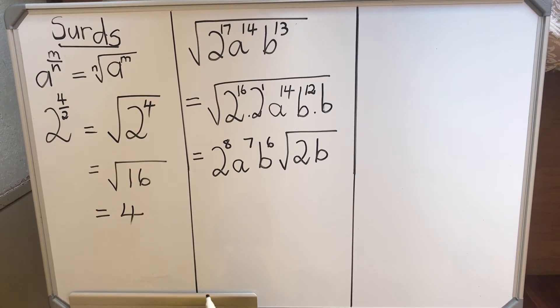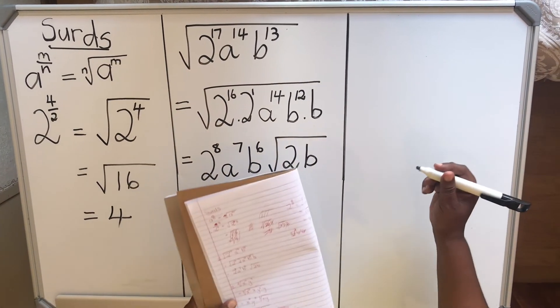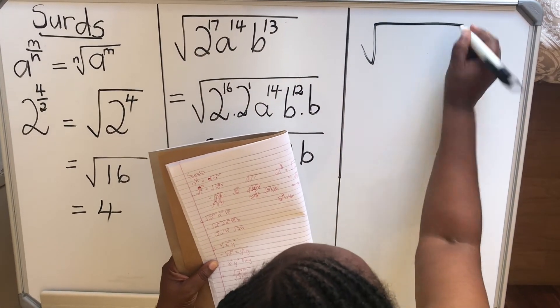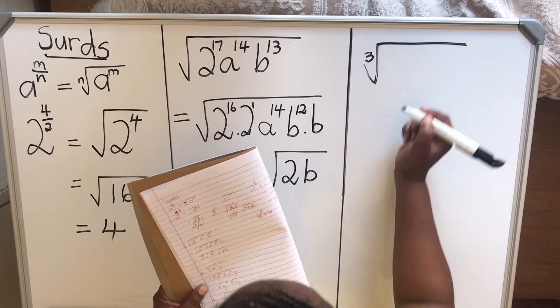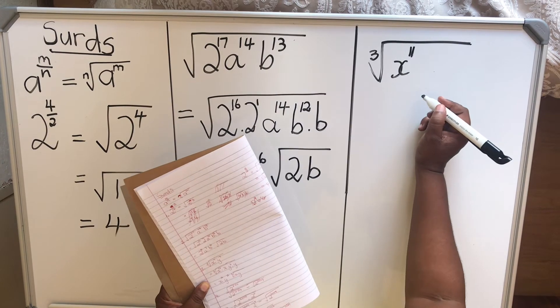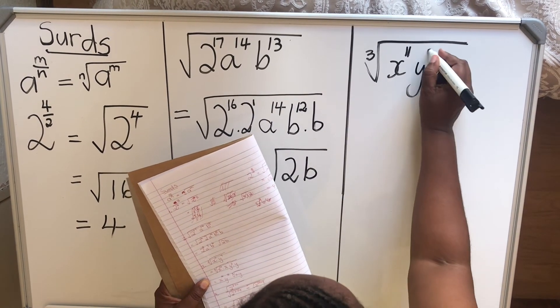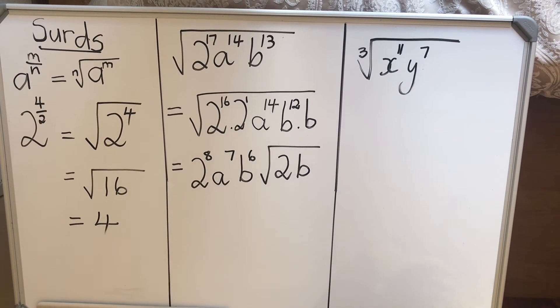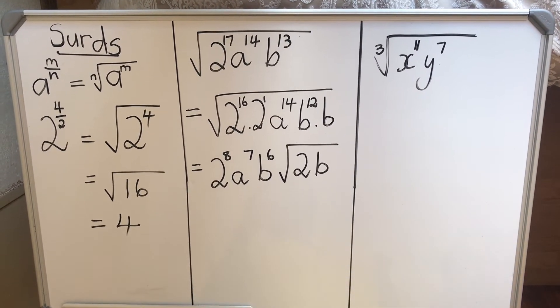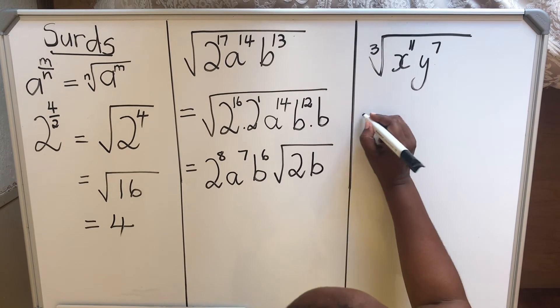Let's look at another example. Now with this example, we're going to have a different index. We're going to have a 3. So if you have cube root of x to the power 11 and y to the power 7, what you want is your powers to be factors of 3, to be multiples of 3.